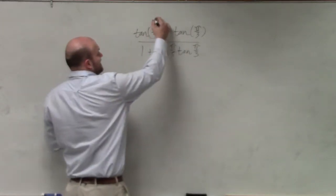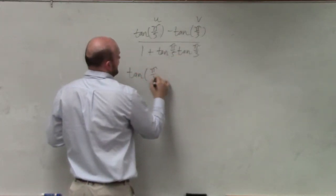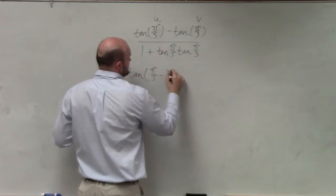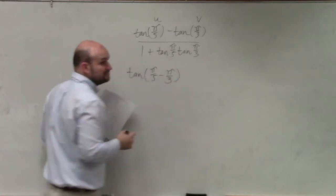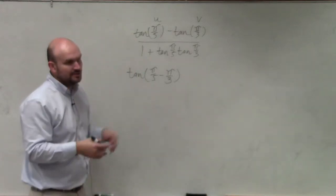So therefore, I could say that is my u and that is my v. So it's really tangent of pi fifths minus pi thirds, right? And that is your final answer.